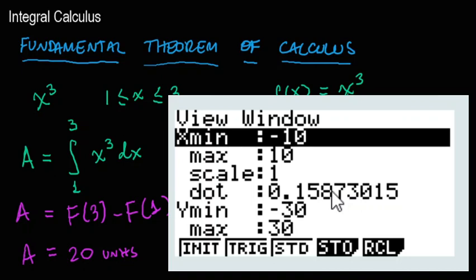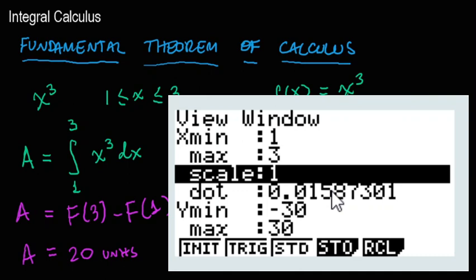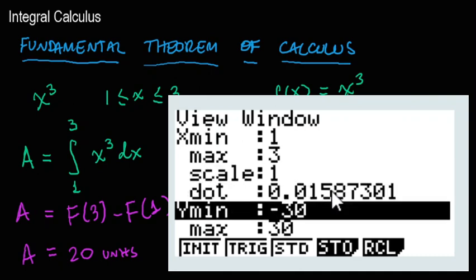Since my x is only going from 1 to 3, I will set x min as 1 and x max as 3. I do not expect any negative values to be there.